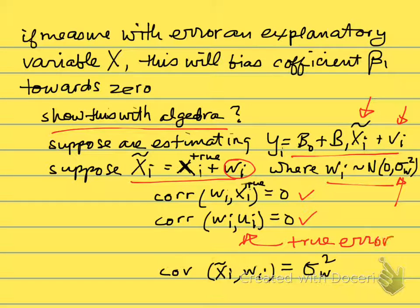We'll also note that the covariance between X̃ᵢ, the mismeasured X, and wᵢ, since X̃ᵢ is defined by this, the covariance is just σ²w. It's just the variance of w, because it's just the covariance between wᵢ and wᵢ, which is just the variance of w. So those are just some preliminaries.